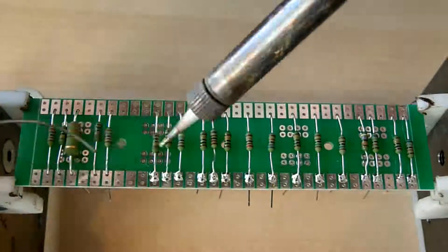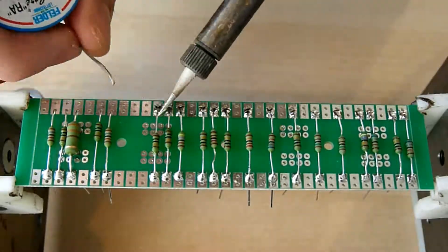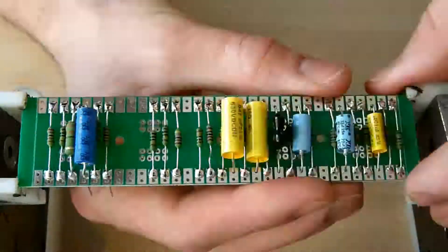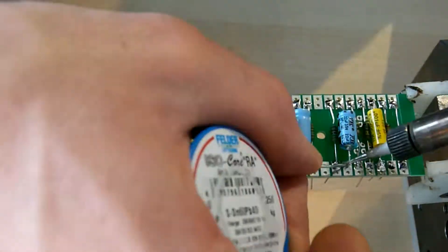In the last episode we soldered the mainboard and equipped the chassis with all components. Today we go for the main wiring and connect everything with each other.